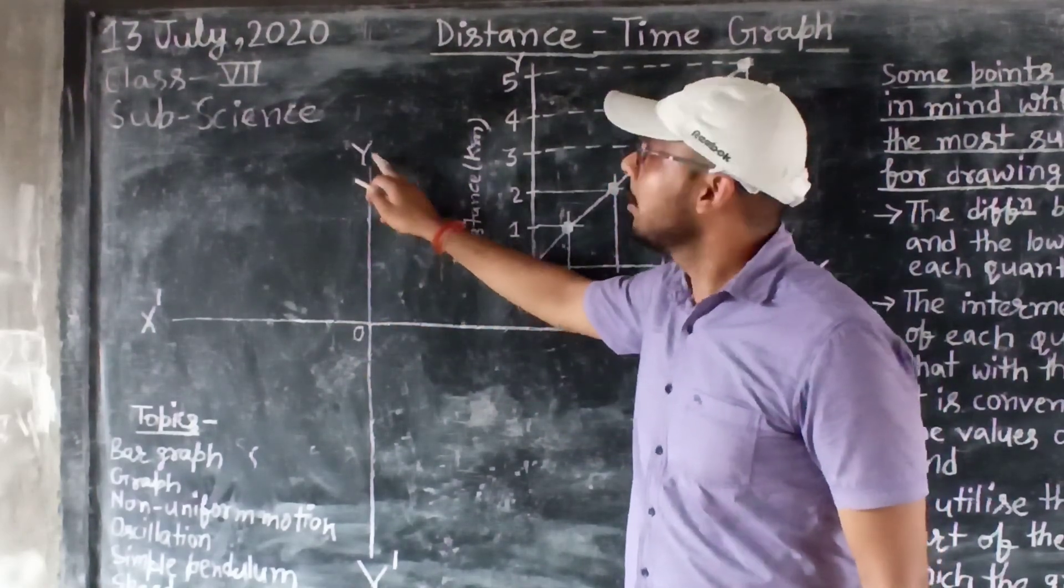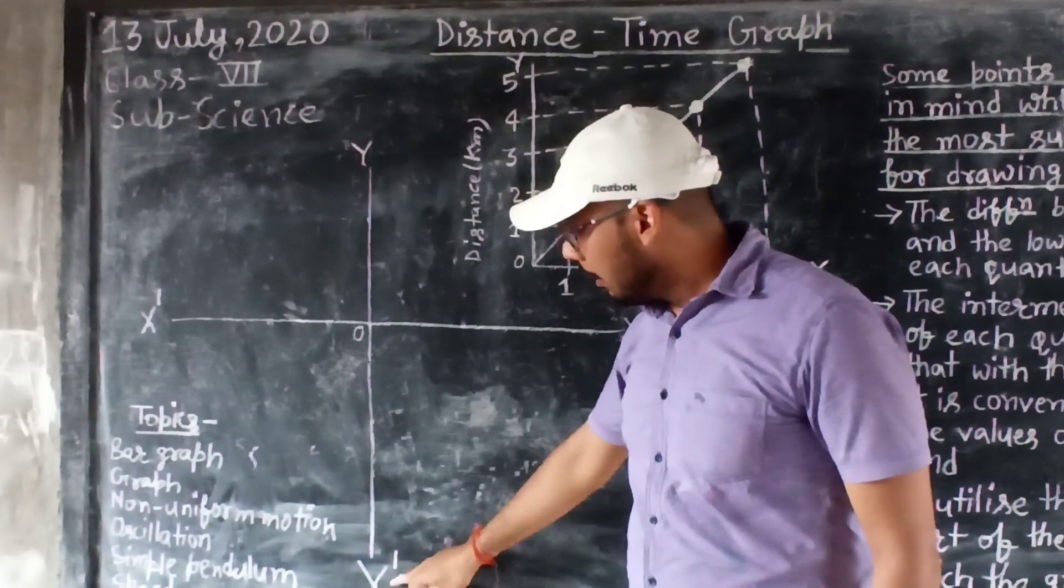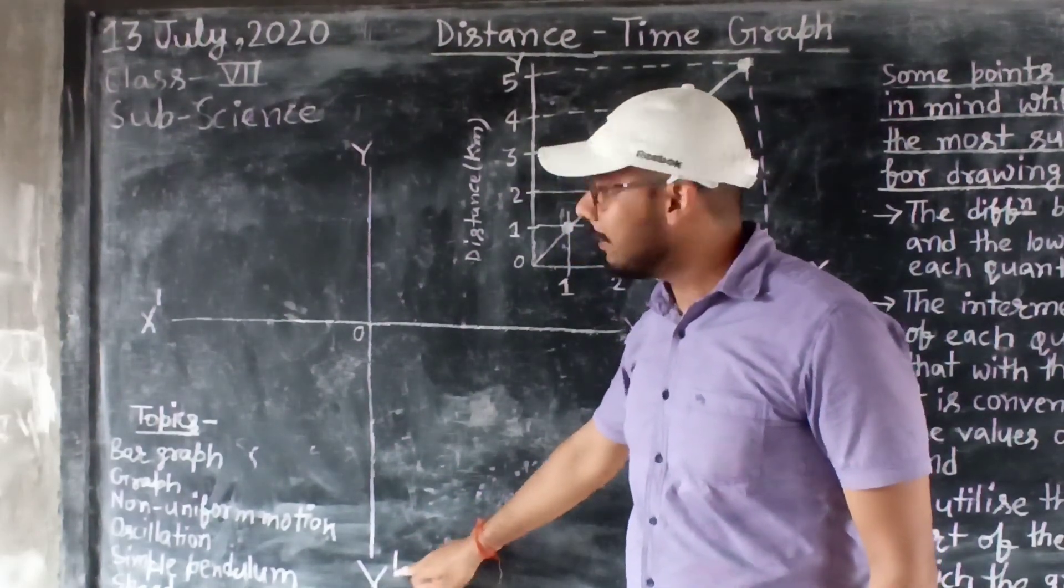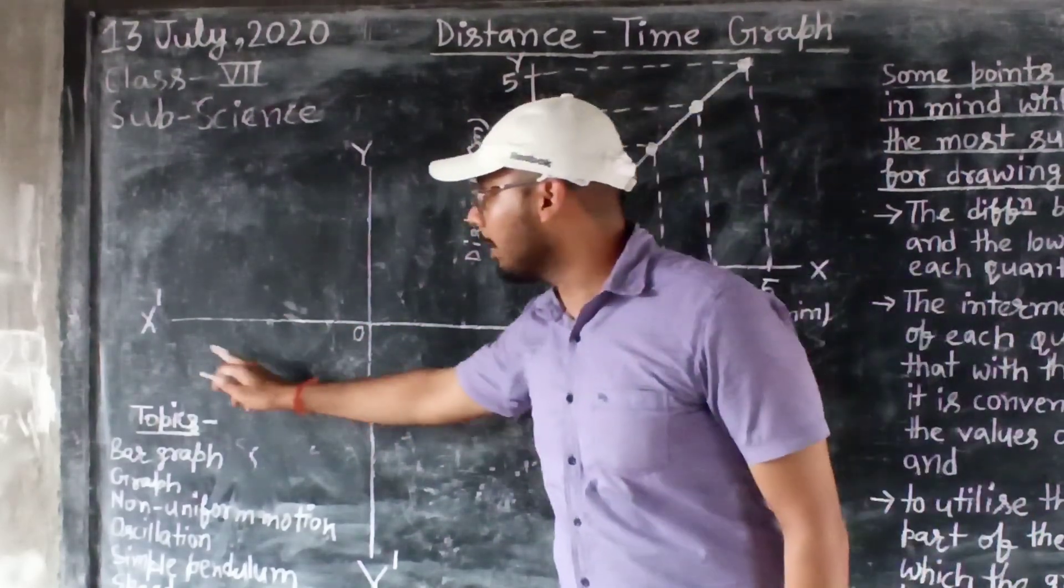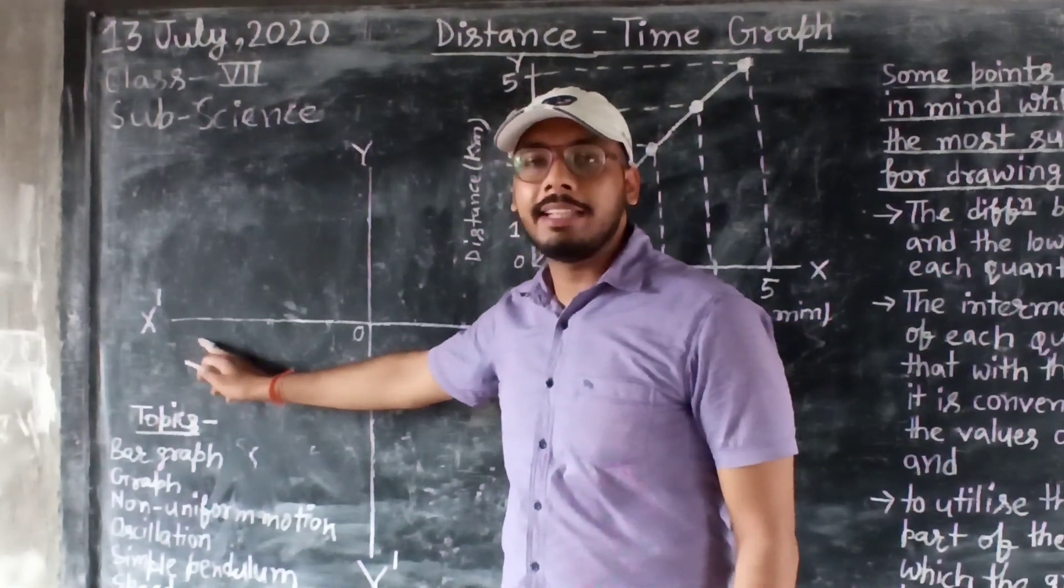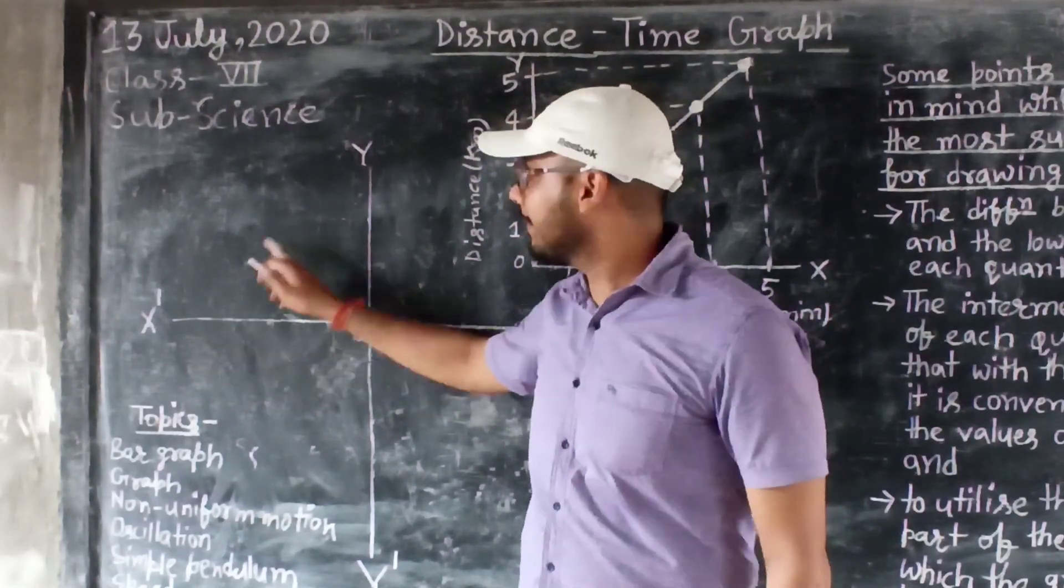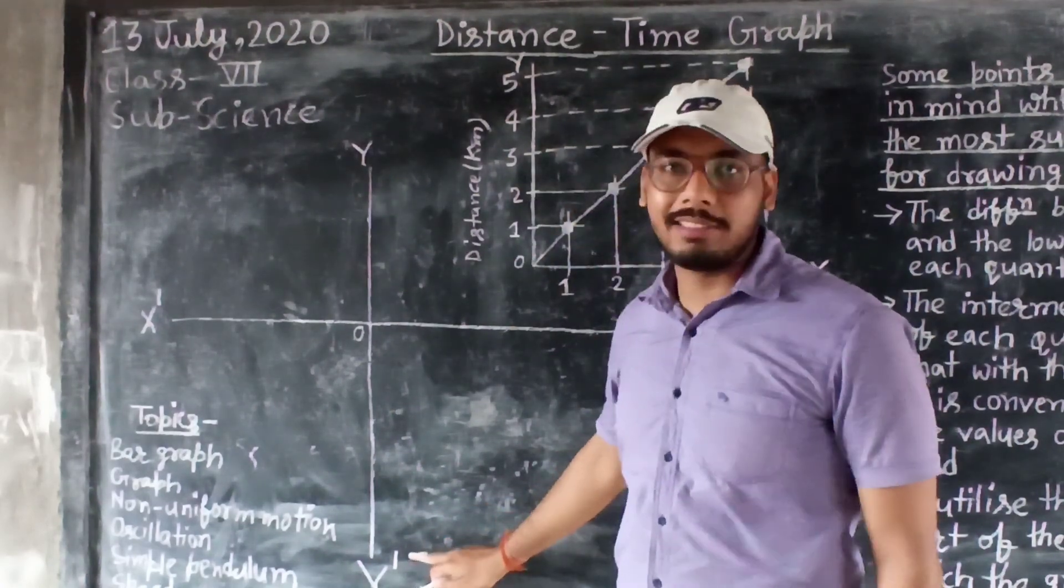And after that, we have to name it. First one is the Y, second is below Y axis, Y dash. And second one is X dash and this one is X. So this one you can see, XOX dash. That means this is the X axis.